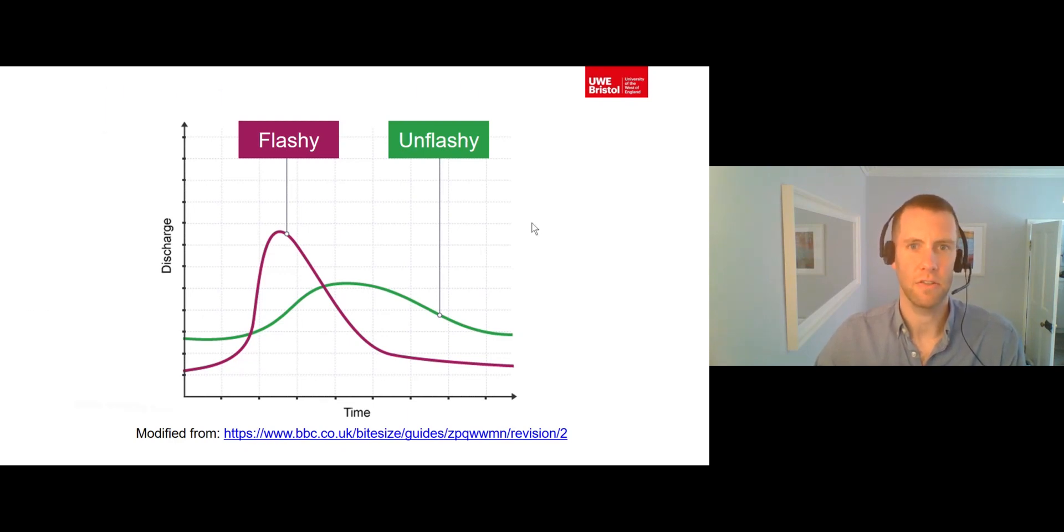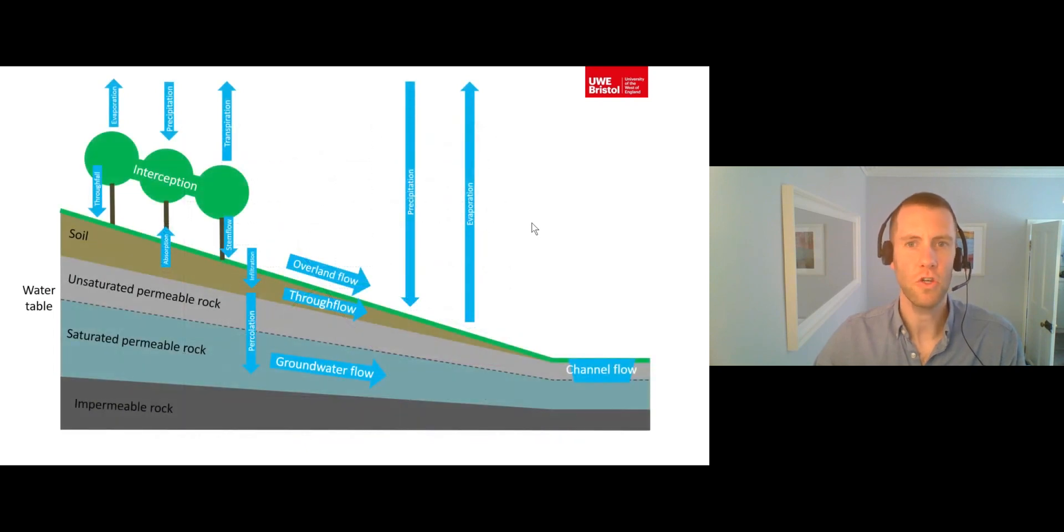Just like we did for natural factors, we can explore the human factors responsible for how flashy a catchment is by examining each stage of the drainage basin hydrological cycle, which we covered in detail in lecture two. Let's start with precipitation.